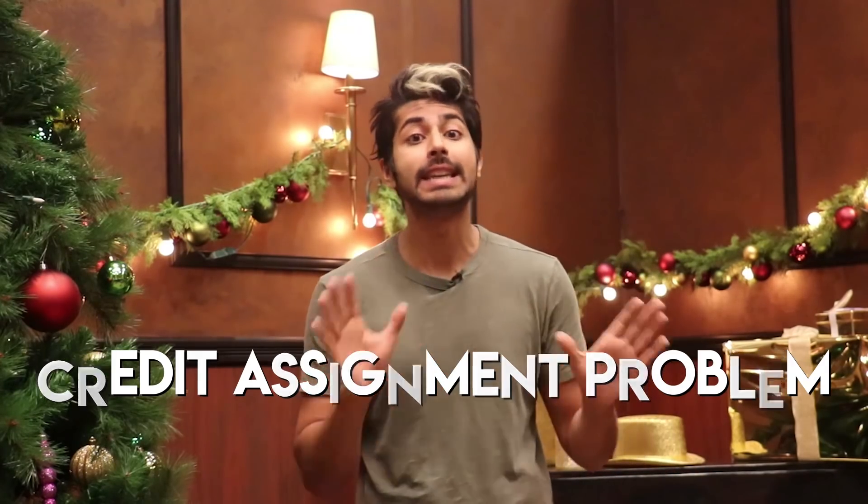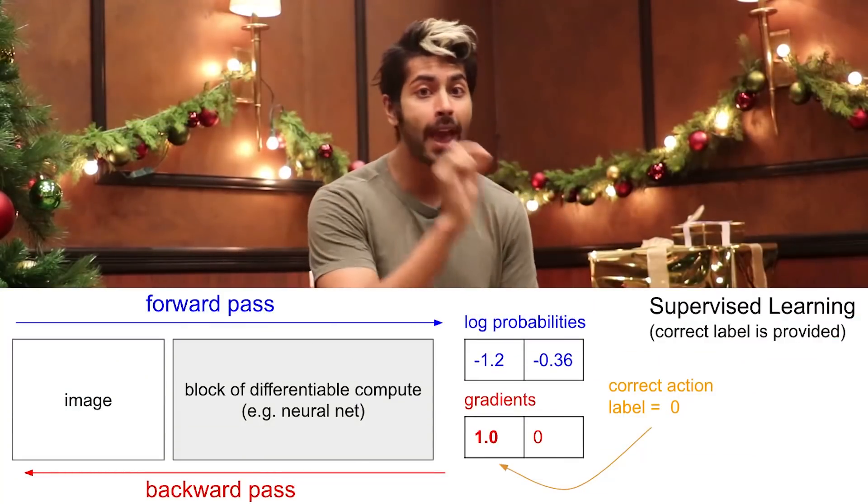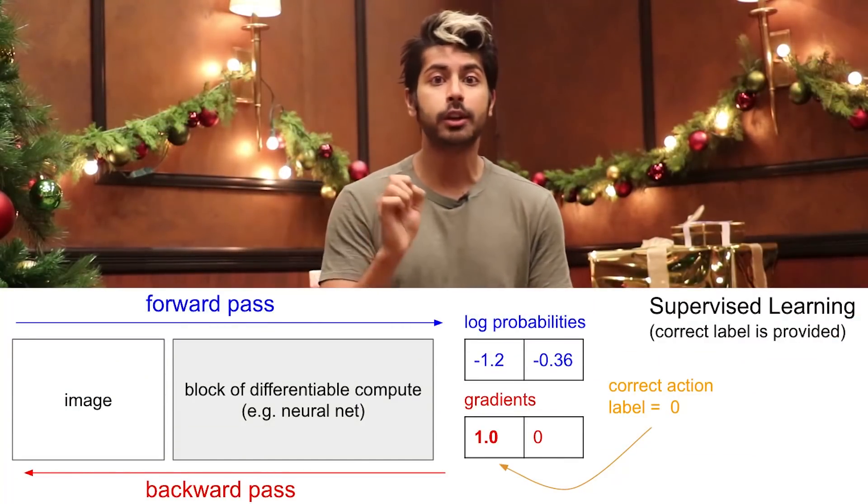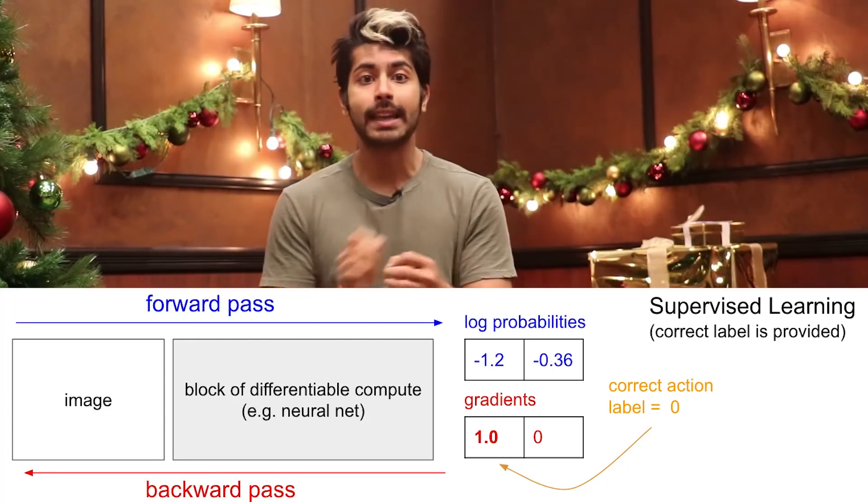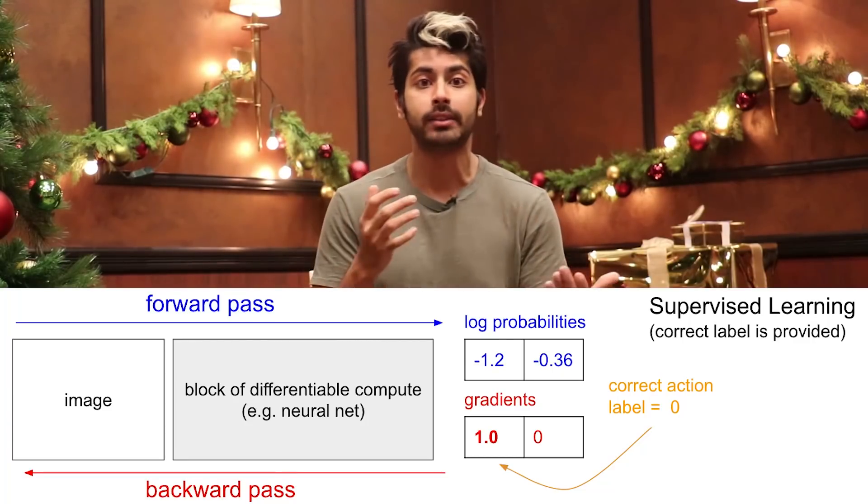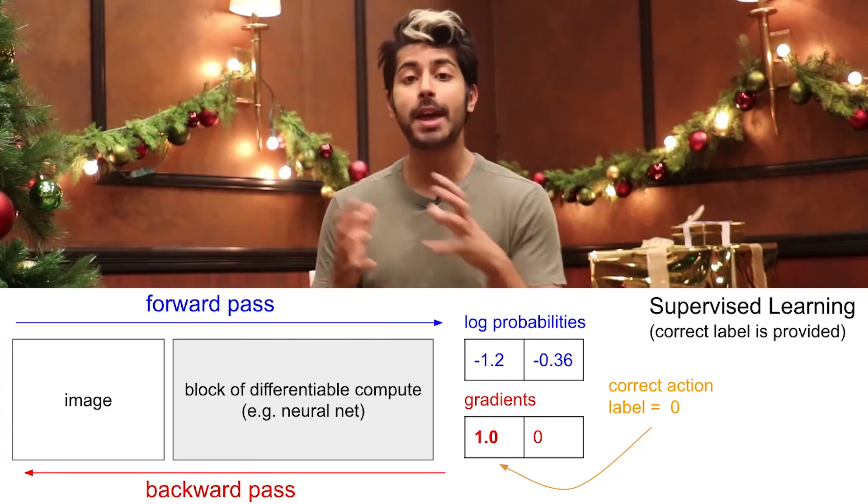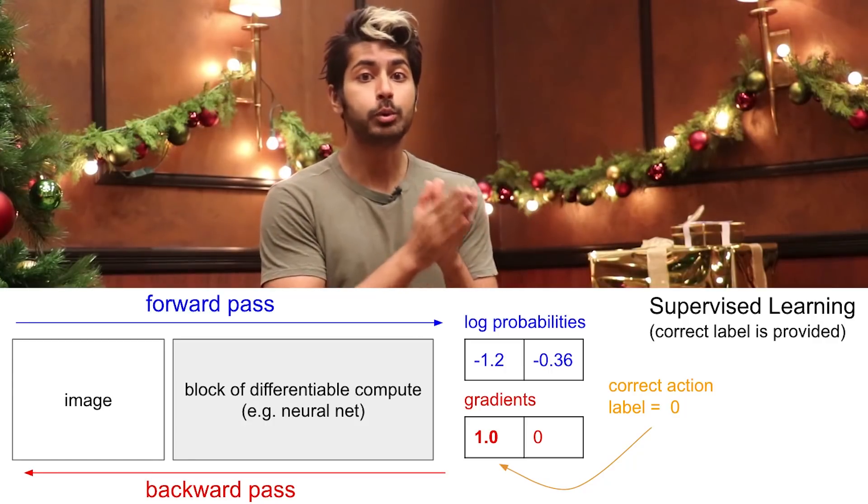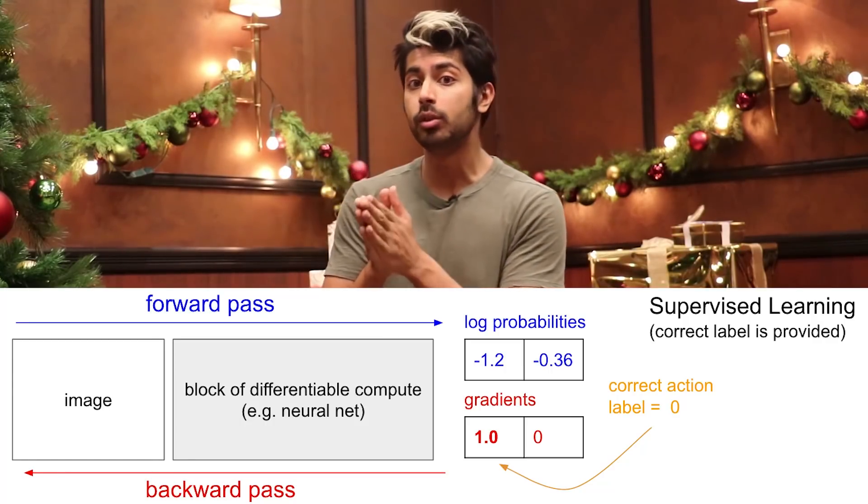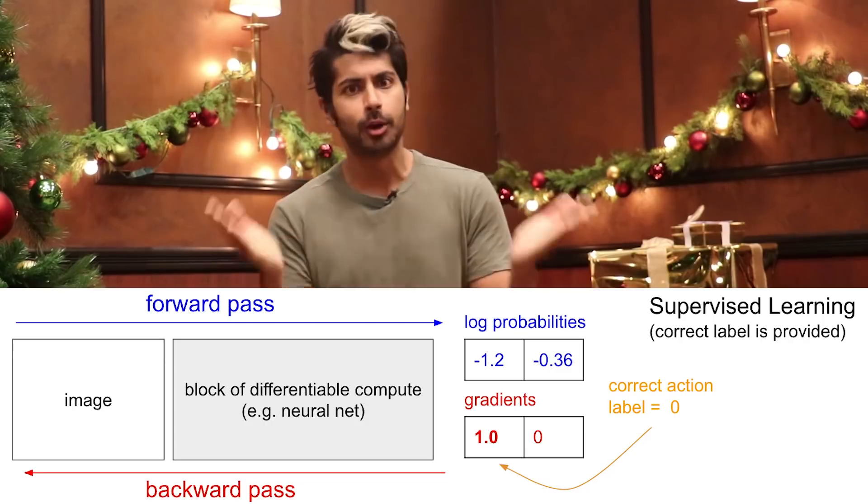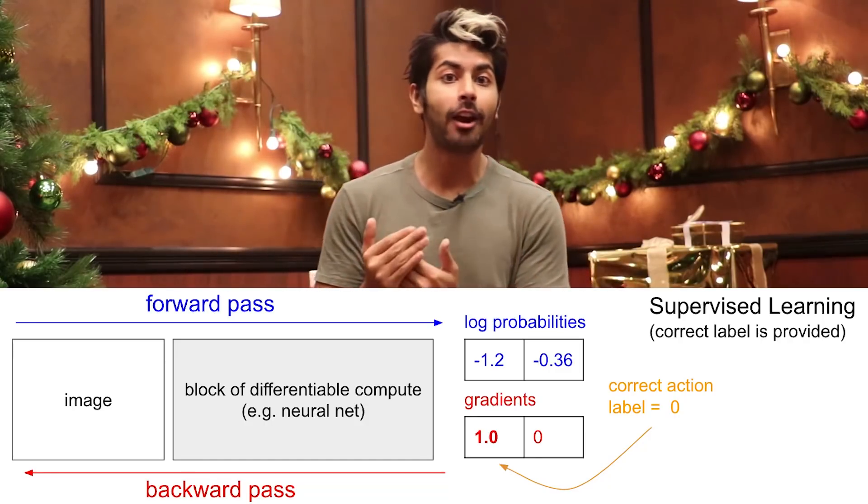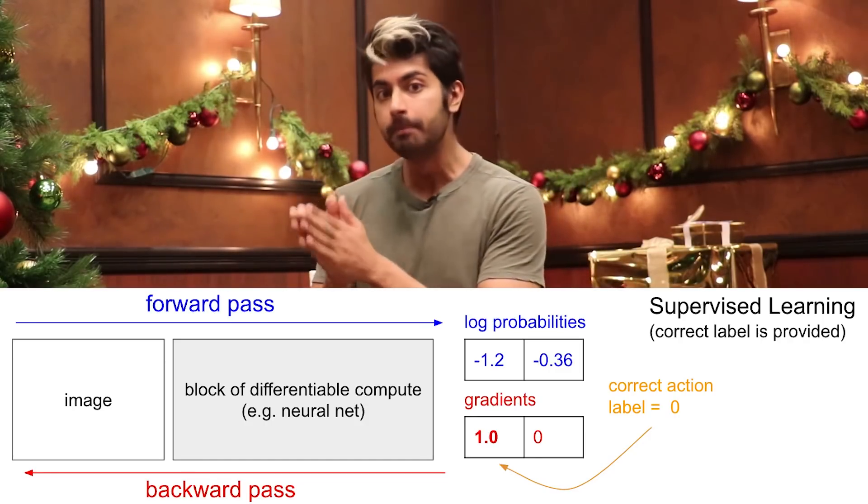How do we solve this? Well, let's think of the easy case first, aka supervised learning. Assume we had labels for every single move, as in we could feed an image to the network and get some probabilities for two classes, up and down. We could compare that prediction to a label, which would tell us the optimal thing to do at that time step, like go up or down.